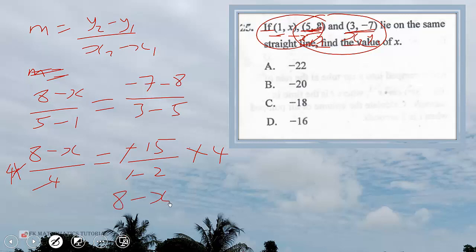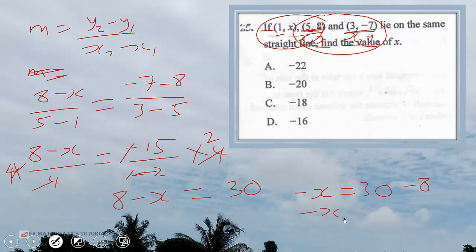So 8 minus x equals 30. Therefore negative x equals 30 minus 8, which means negative x equals 22, so x equals negative 22. The correct answer is option A.